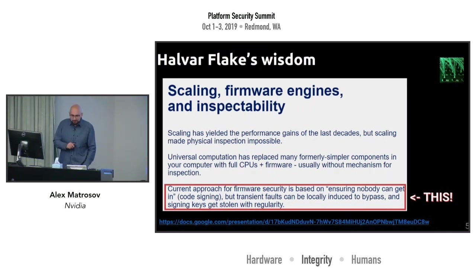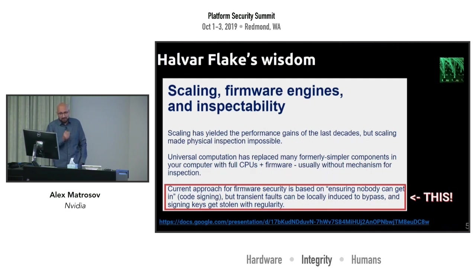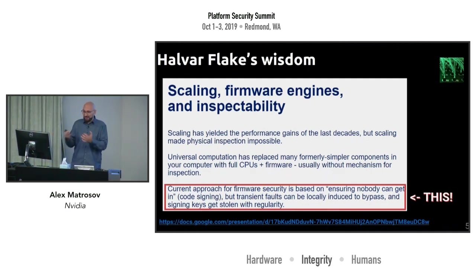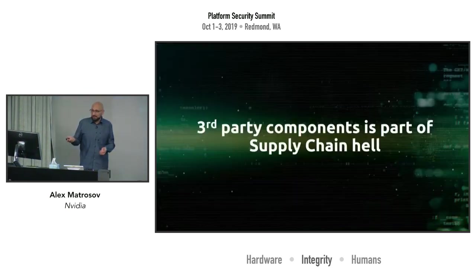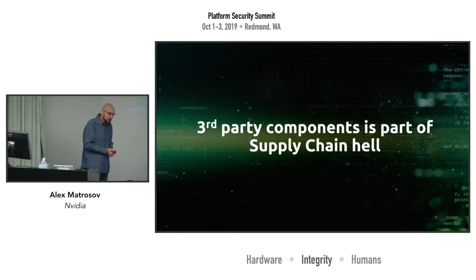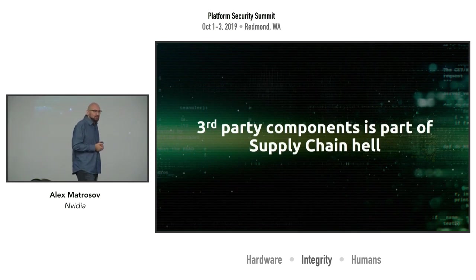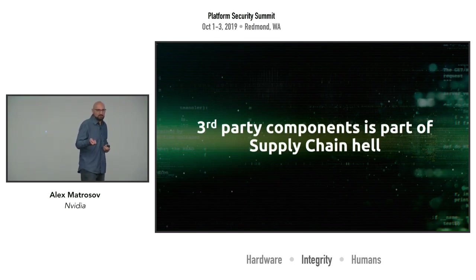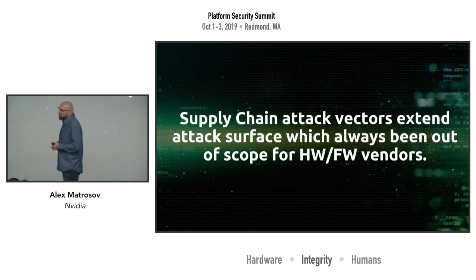Back to Halvar Flake's point: the current approach to firmware security is based on ensuring nobody can change code via code signing. But if somebody compromises your signing server, you can do nothing — malicious content can be shipped to your clients. We also have third-party components as part of the supply chain. In many cases hardware vendors don't control all firmware across the system. Think about USB-C — in many cases the USB-C firmware comes as a binary blob from a third party, because accessing source code costs more. Supply chain attack vectors extend the attack surface which has always been out of scope for hardware and firmware vendors.